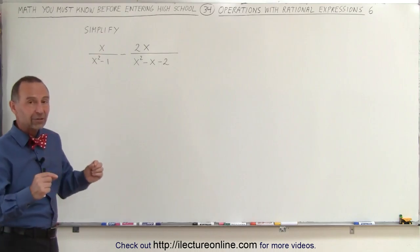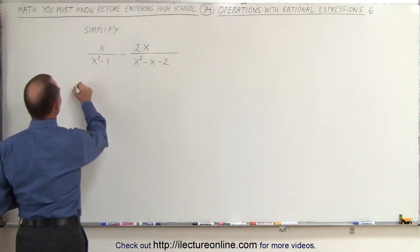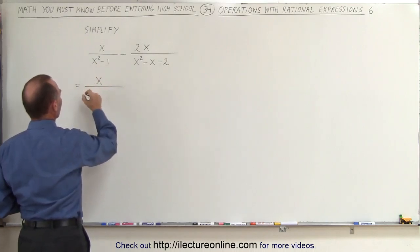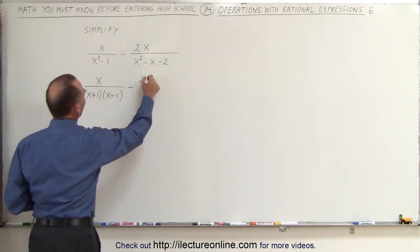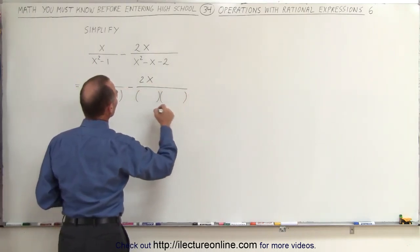To do that, we're first going to factor both denominators. So we're going to rewrite this as follows. This becomes equal to x divided by, this is the difference of squares, so we can write this as x plus 1 times x minus 1 minus 2x, and when we factor this denominator...